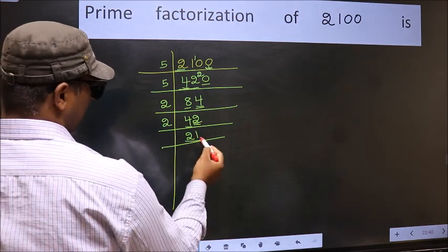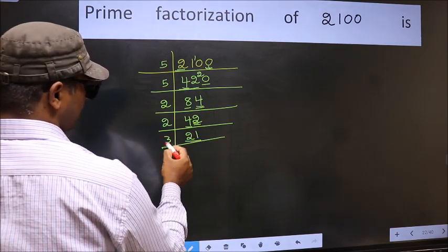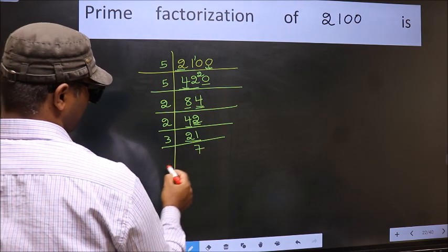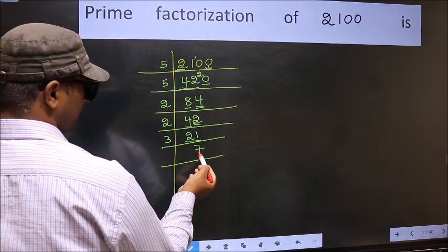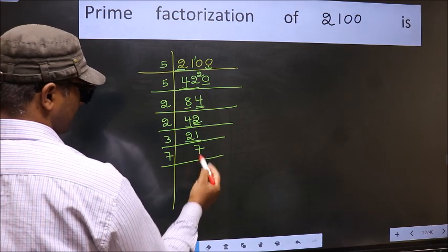Now here we have 21. 21 is 3 times 7, equals 21. Now we have 7. 7 is a prime number, so 7 times 1 is 7.